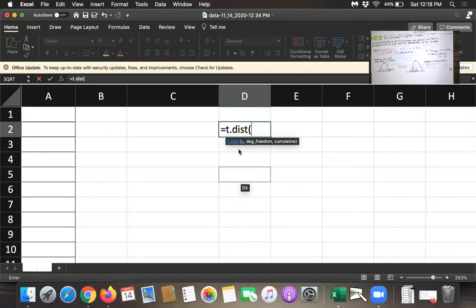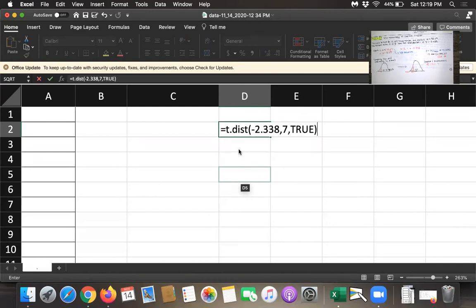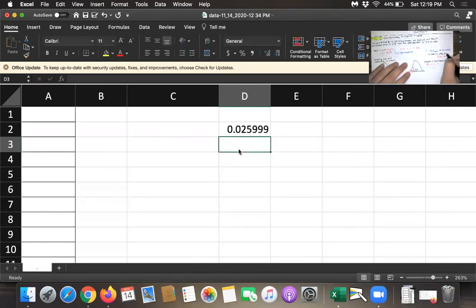Oh, and they actually are giving us a third argument here. The first thing you type is the test statistic, and we say negative 2.338. That was given to us. The degrees of freedom is 7, and then they ask if you want the cumulative distribution. So basically, they're saying, do you want the area to the left of that? And we do. So we're going to say true there. So I need a third argument. We'll put true there on that cumulative, and that is approximately equal to 0.025999.